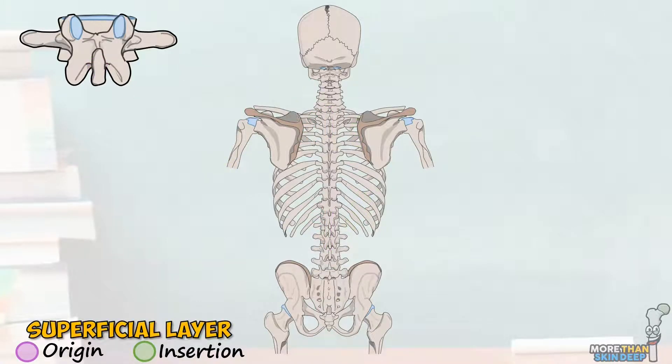Now let's look at the superficial back muscles. Here there are five muscles and you'll probably have heard of most of them. They all originate from the vertebral column or skull in some way and insert into the bones of the shoulder joint — the clavicle, scapula, and humerus. For this reason, they all act in some way to move the shoulder joint and are occasionally called the appendicular muscles.